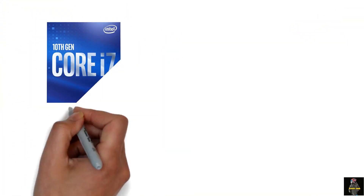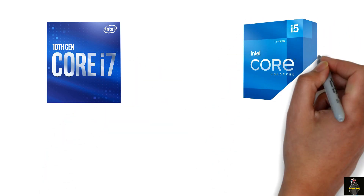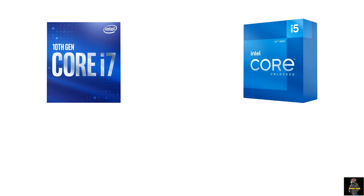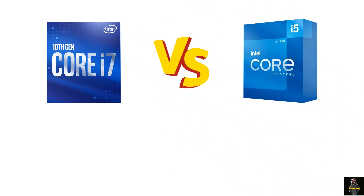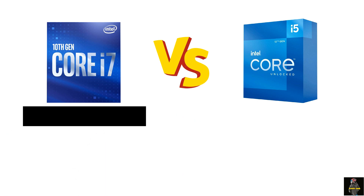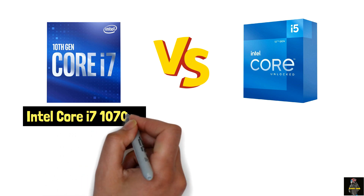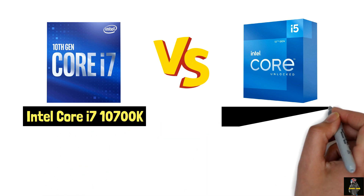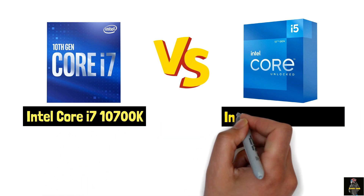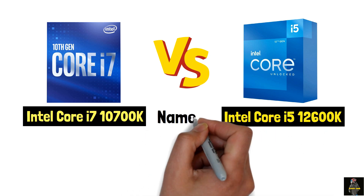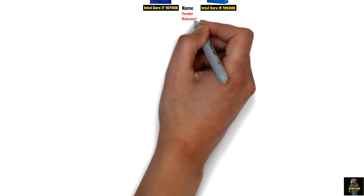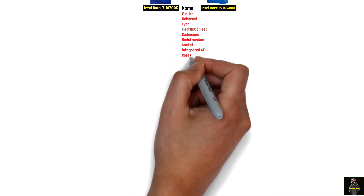Intel i7 Processor versus Intel i5 Processor. Intel Core i7-10700K versus Intel Core i5-12600K — a specification comparison between them.